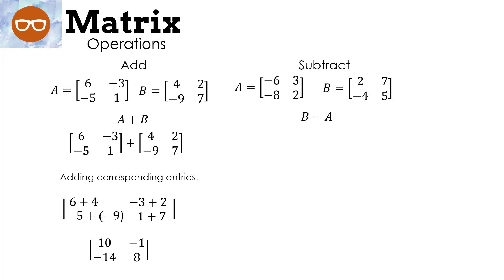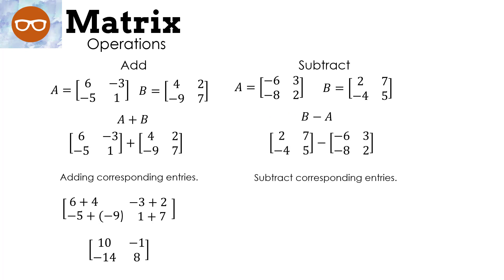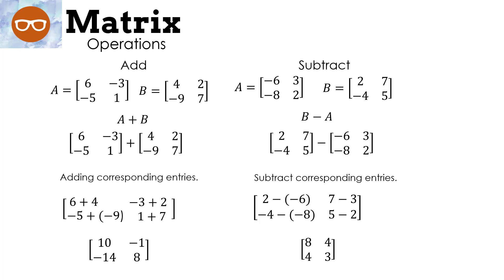One thing you really have to be careful about is what you're subtracting. The first example we took A plus B, but now we're taking matrix B minus A, and order does matter. We subtract the corresponding entries: 2 minus negative 6, 7 minus 3, negative 4 minus negative 8, and then 5 minus 2 — giving us 8, 4, 4, 3. You'll notice all these matrices are exactly the same size — they're 2 by 2. When adding and subtracting, the two matrices must be exactly the same dimensions.